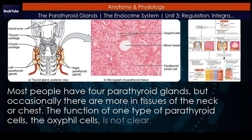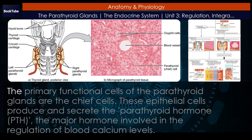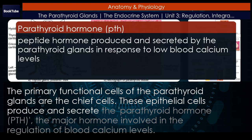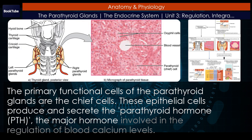The function of one type of parathyroid cell, the oxyphil cells, is not clear. The primary functional cells of the parathyroid glands are the chief cells. These epithelial cells produce and secrete parathyroid hormone, PTH, the major hormone involved in the regulation of blood calcium levels.